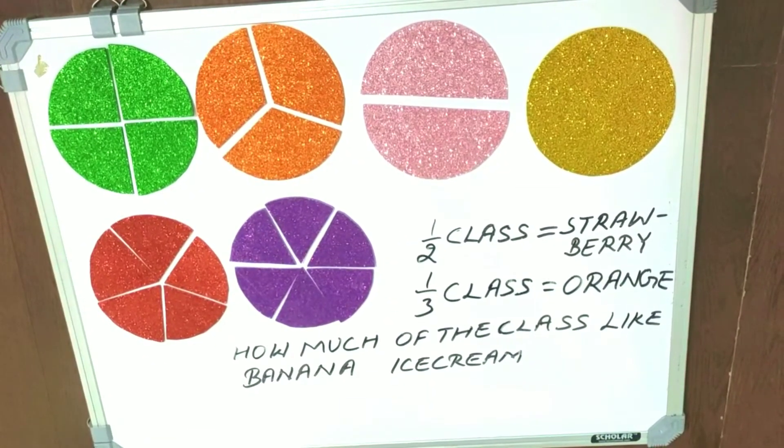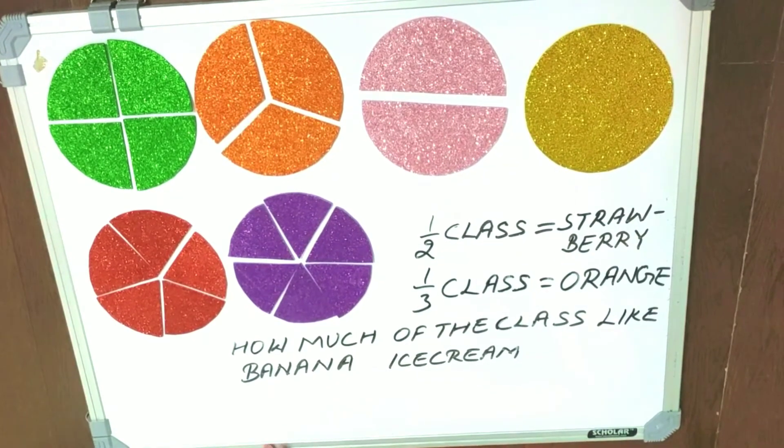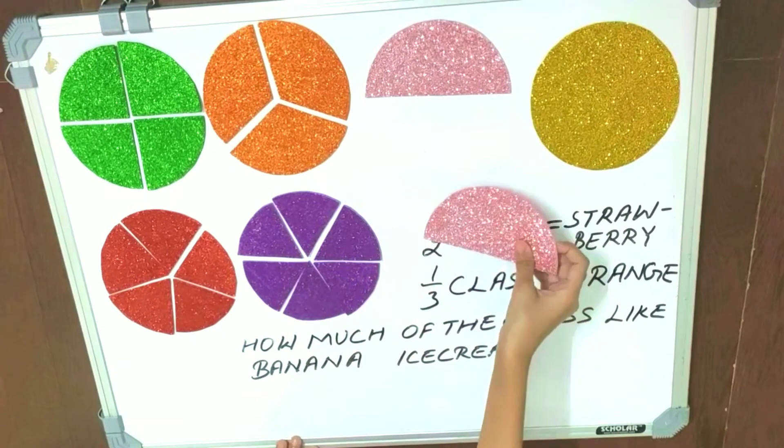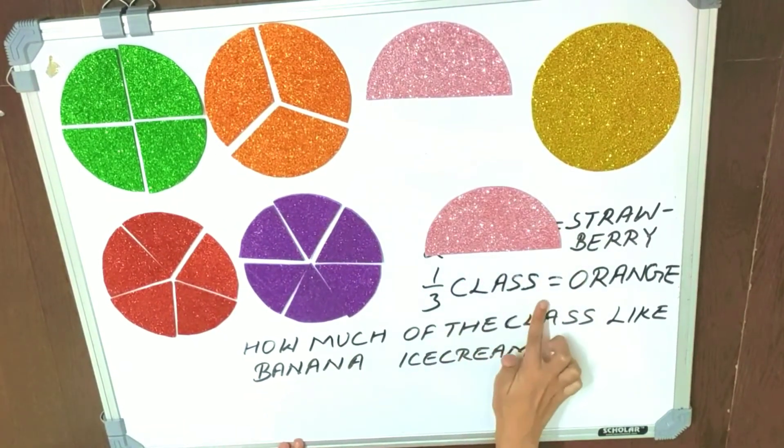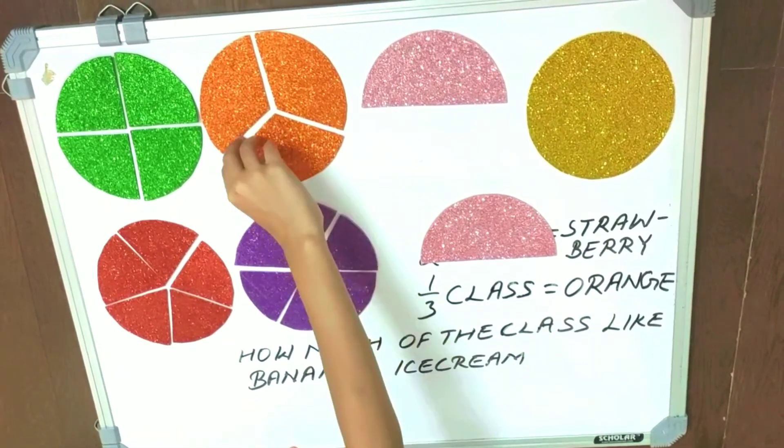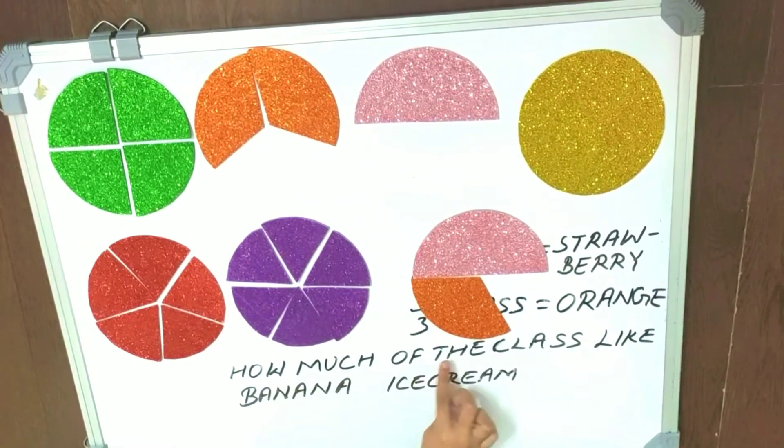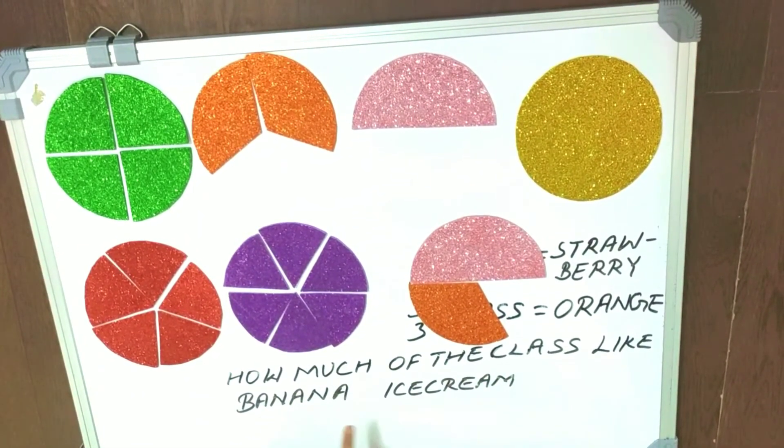Now we will solve a question. The question is, half of the class likes strawberry ice cream, one third of the class likes orange ice cream. So how much of the class likes banana ice cream?